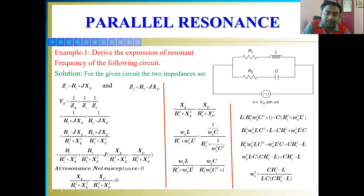Setting imaginary part to zero gives: XL/(R1² + XL²) equals XC/(R2² + XC²). We know XL = ω₀L and XC = 1/(ω₀C). Substituting these into both sides and taking ω₀²C² as LCM, the numerator terms simplify. The R² term becomes R²ω₀²C², and after cancellation we get ω₀C in the numerator and R²ω₀²C² + 1 in the denominator.